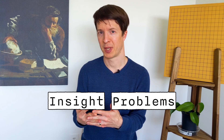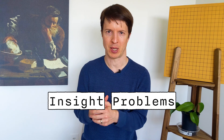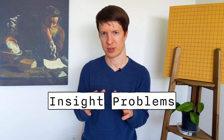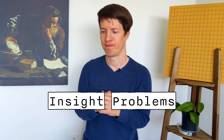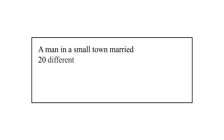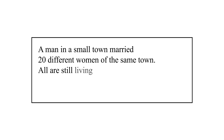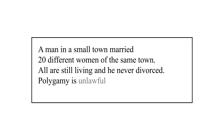A large number of the people who get the problems correct realize there's something tricky about the problem. They still overestimate how many people will get it correct, but they know they had an intuitive answer they had to reject. The structure of CRT problems makes them quite different from another class of problems, usually called insight problems. Let's look at one of those insight problems to see how the structure is different. A man in a small town married 20 different women of the same town.